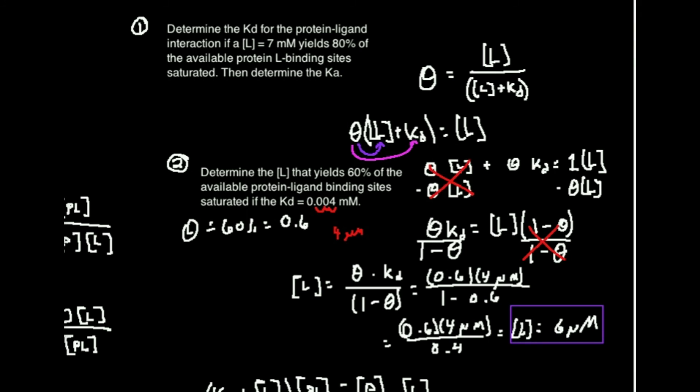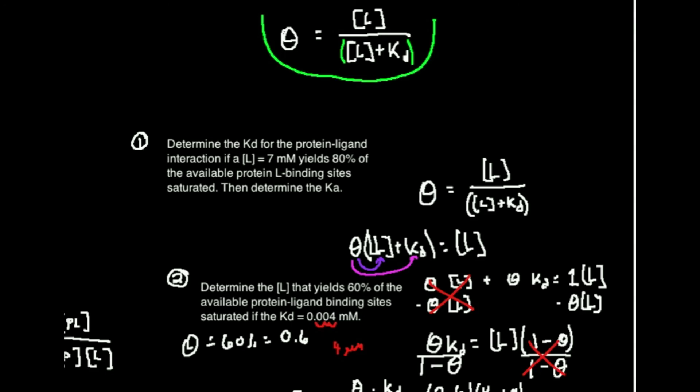So hopefully that makes sense. That gives you ultimately here two problems for ultimately determining things in this expression that we have above. The reason I didn't do one for solving for theta is it's sort of a little bit trivial. You would know the ligand concentration in Kd, you just plug things in. I purposely wanted to give you two examples where you had to rearrange these equations a little bit. But hopefully this made sense.